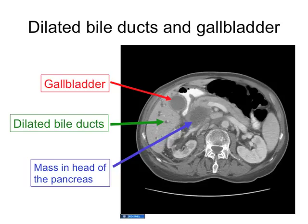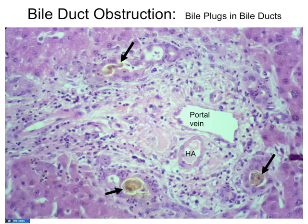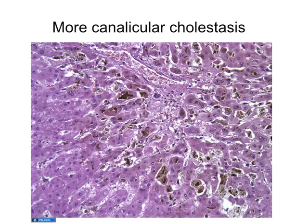On the CT, you can see cross-sections of dilated ducts right next to the white portal vein. Cutting further down shows the body and tail of the pancreas, and here's a big mass in the head of the pancreas — a pancreatic cancer causing obstruction of the distal common bile duct. If you happen to have a liver biopsy, you may see retained bile in bile ducts up in the liver and bile lakes that have leaked out into the parenchyma.